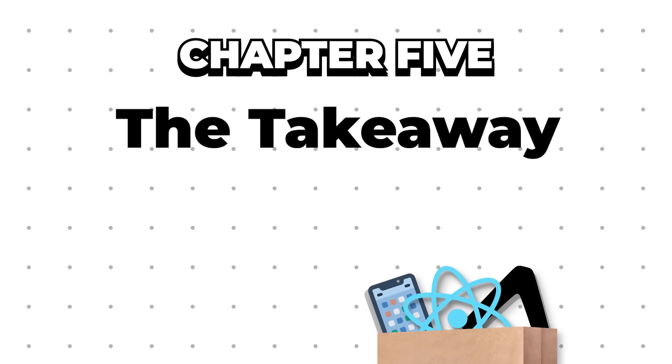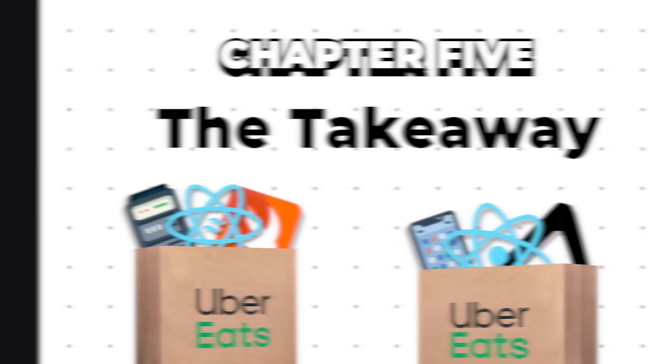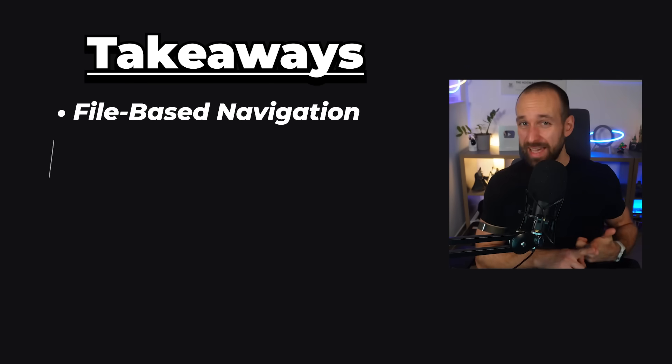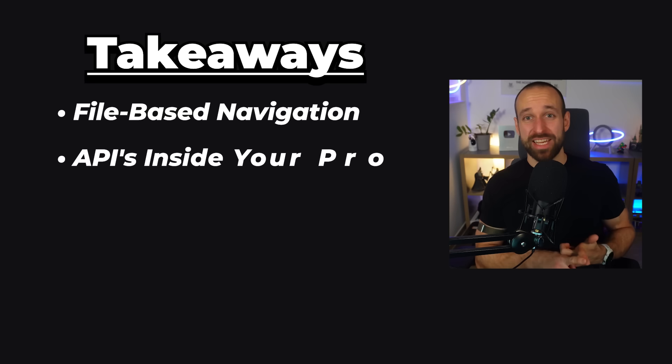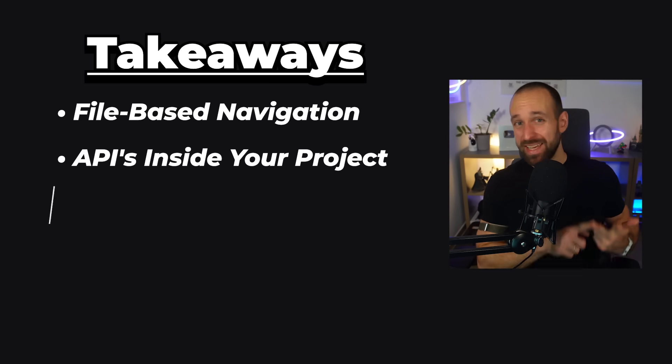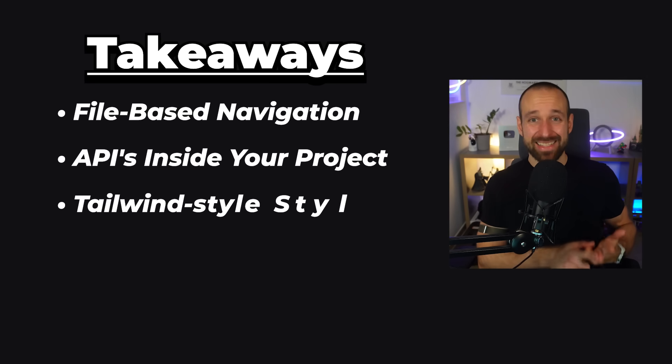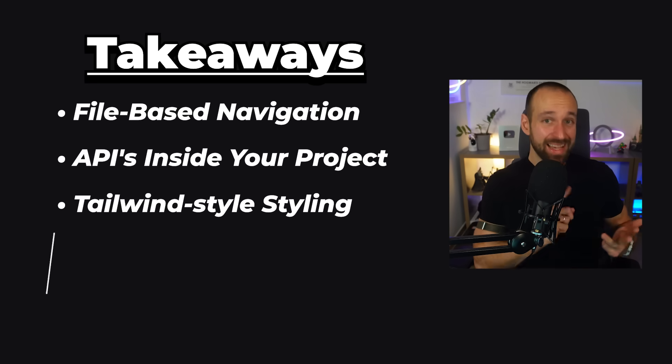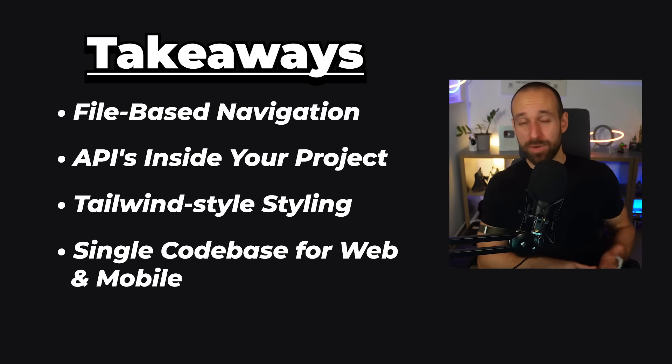If you've ever struggled with maintaining separate code for web and mobile or mono repositories, this setup eliminates that pain entirely. So let's recap: with Expo Router and Nativewind, you get file-based navigation that just works, APIs inside your project without a separate backend, Tailwind-style styling that's fast and consistent, and a single codebase for web and mobile. This is peak productivity for React Native.